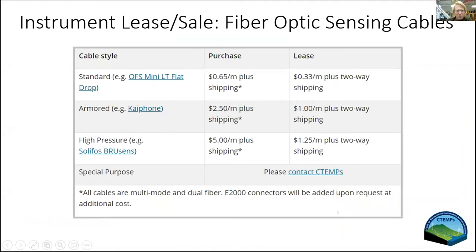On costs: the least expensive cable is roughly $600 to lease two kilometers, and about $1,200 to $1,300 to buy, plus shipping — neither of these include shipping. The prices go up from there when you get into armored cable. We do have some brand-new armored cable to lease, though we're down to about one kilometer spools on those, but we have options. We saw some great presentations today on other cable solutions for more complex deployments.